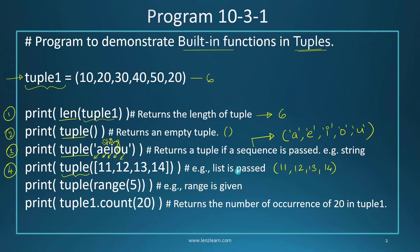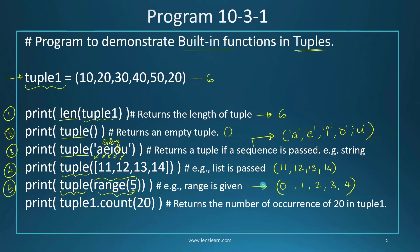In the next print statement, we create a tuple using the range() function. When we call range(5), the result generates values 0, 1, 2, 3, up to 4. On top of those values, a tuple will be created by the tuple() function, so the output is a tuple with values 0, 1, 2, 3, and 4.